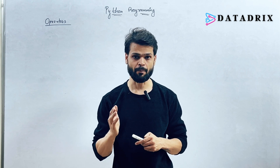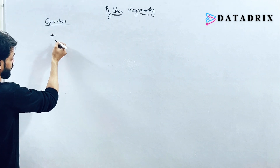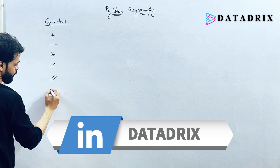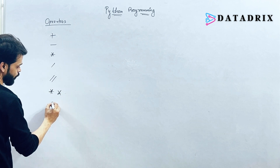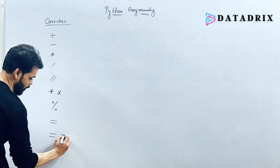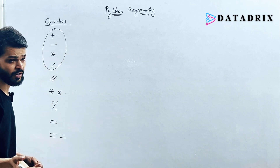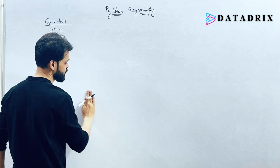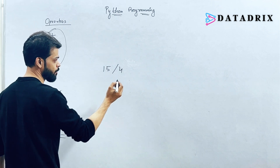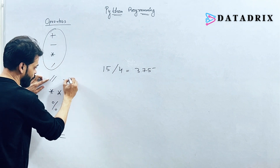Now let's understand operators. Operators are symbols which perform operations on values. We have multiple operators in Python: addition, subtraction, multiplication, division, floor division, power (exponential), modulus for remainder, the assignment operator (equals to), and the comparison operator (double equals to). For example, 15 divided by 4 gives 3.75.